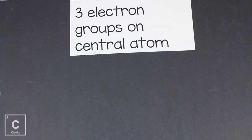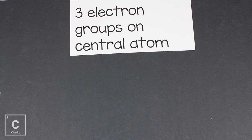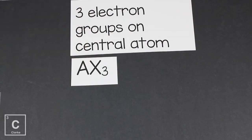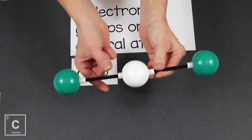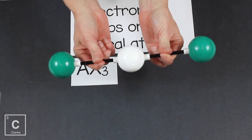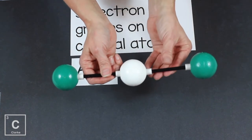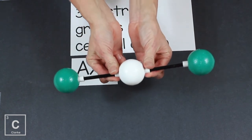When we have three electron groups on the central atom, one option is having a central atom with three bonded elements — general formula AX3. Remember, electron groups hate each other: bonds hate each other, lone pairs hate each other. They want to be as far away from each other as possible. Going back to the last example: if we have our central atom, the groups are going to be as far away from each other as possible because they repel each other.